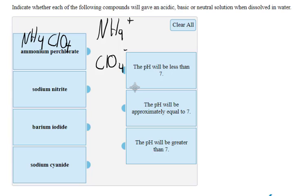In other videos we talked about how conjugate bases of strong acids have no basic activity. They simply float around like a spectator ion. Therefore we predict that the pH would be less than 7 for ammonium perchlorate.